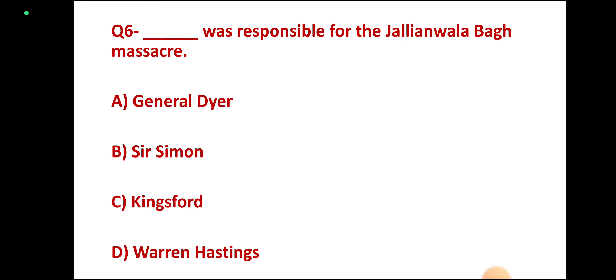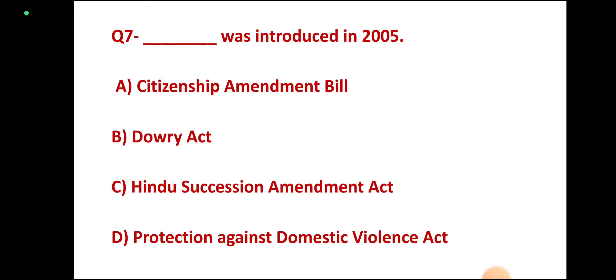Question 6: Who was responsible for the Jallianwala Bagh massacre — General Dyer, Sir Simon, Kingsford, or Warren Hastings? Correct answer: General Dyer.